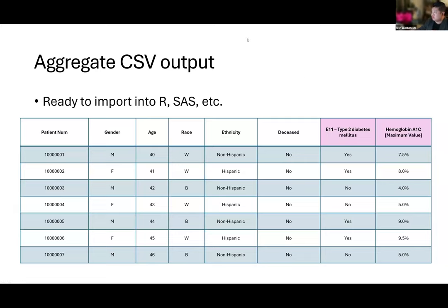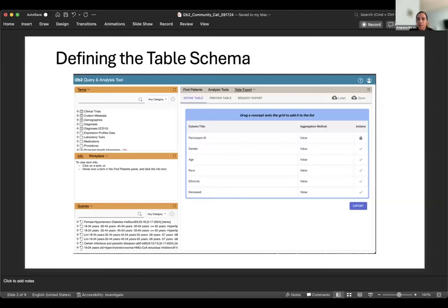I'm going to turn it over to Anupama, who's going to show you exactly how you initiate this type of request and how the admin in I2B2 would potentially service that request. I would think of getting data out of the system in terms of three big steps. The first step Nitch just walked through — for the researcher to define their aggregate table — done through the plugin architecture where they load the plugin and pull concepts from the ontology to build out the table they want to create.